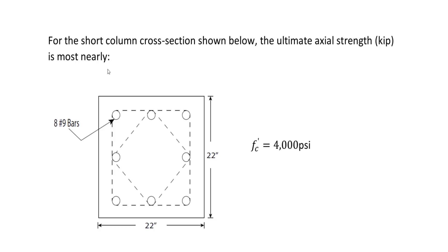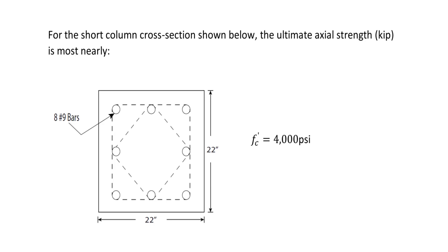Let's work on this FE exam question about structural design. For the short column cross-section shown below, the ultimate axial strength in kips is most nearly what? So here's the short column we're analyzing.